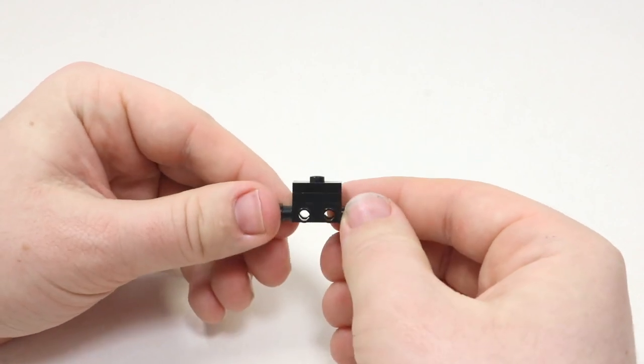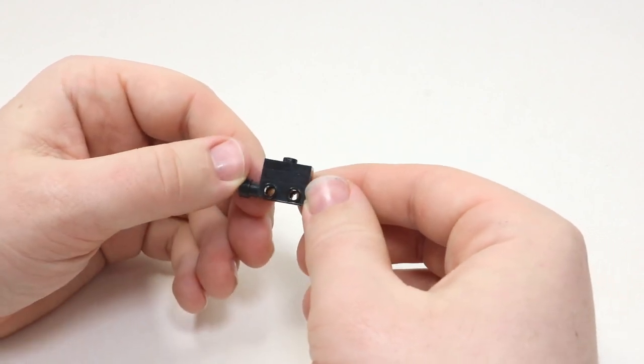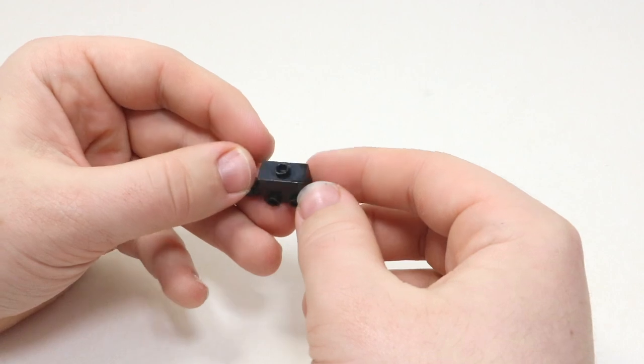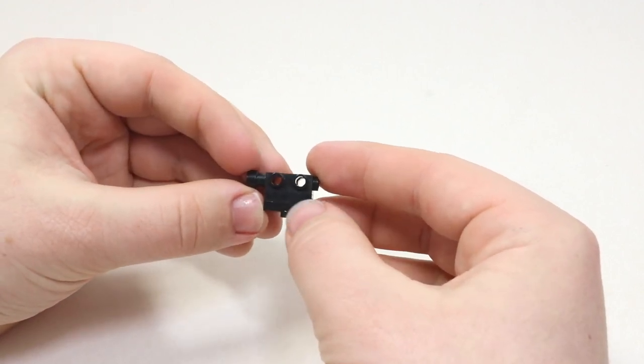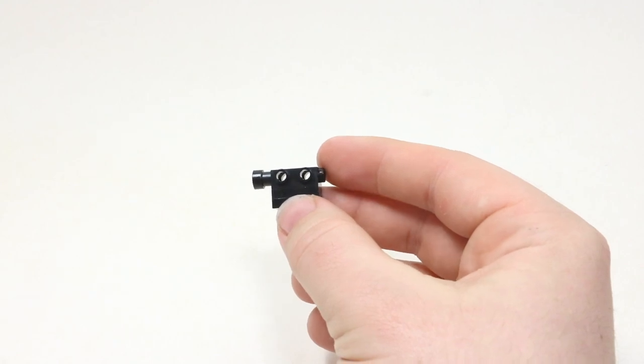Now normally, you might think the camera would look like this because that makes sense with the regular LEGO building method, but this camera is actually built using a lot of snot, which is studs not on top. So this is what it's actually going to look like.